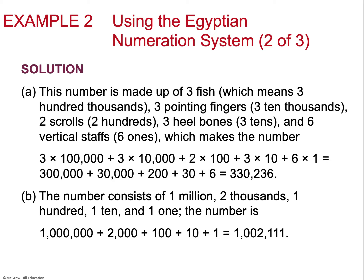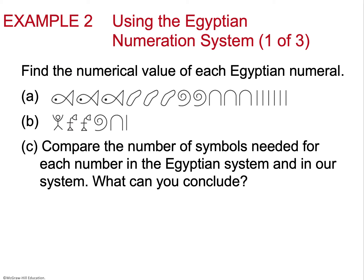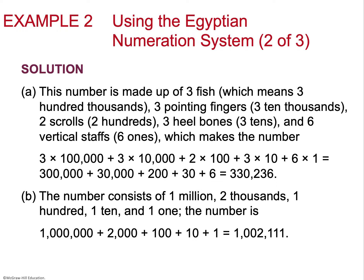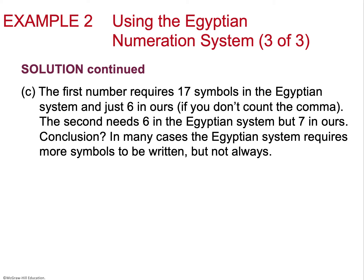For part B, taking the symbols: 1,000,000 plus 2,000 plus 1,100 plus 10 plus 1 — that's the expanded form. This is why we teach it: we're teaching students to write expanded form in a fun way. For part C, the first number requires 17 symbols, which is a lot — it's much easier to write the number directly. We're thankful for how numeration has evolved over time.